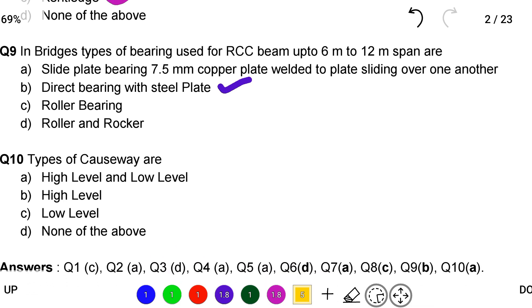Next question: the types of causeway are option A high level and low level, option B high level, option C low level, option D none of the above. So the correct answer is option A high level and low level.